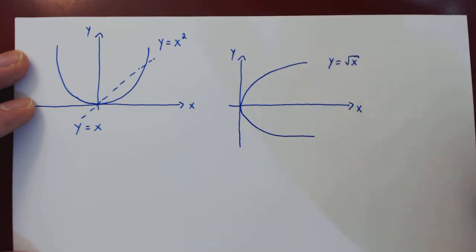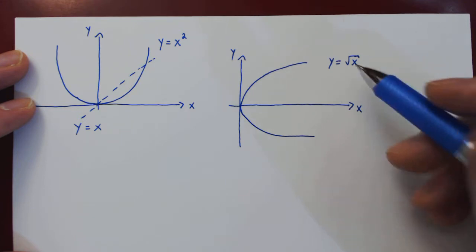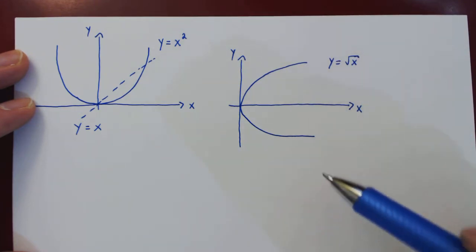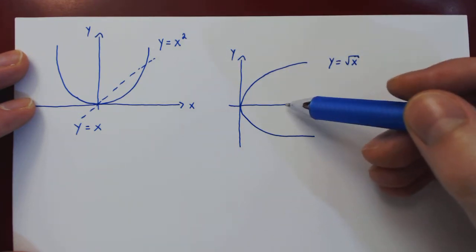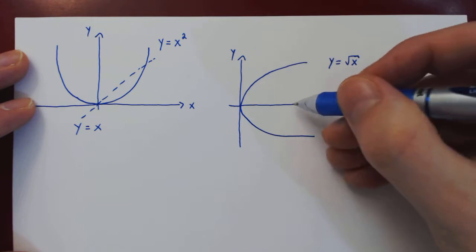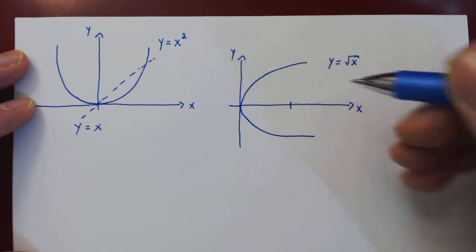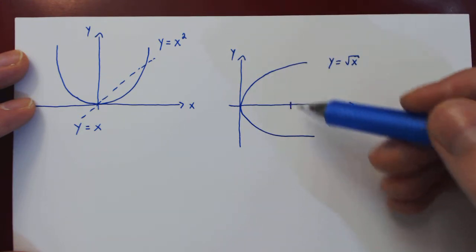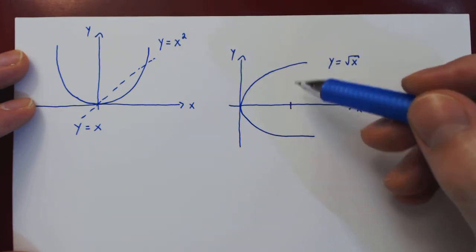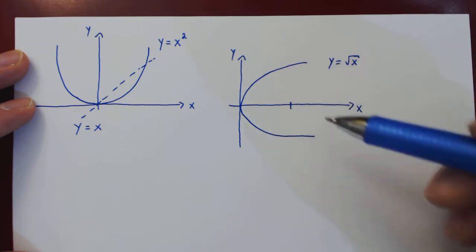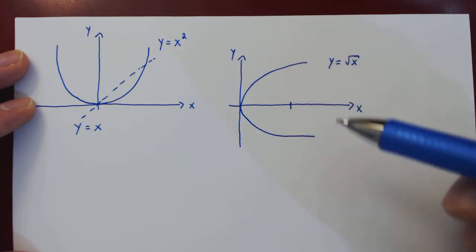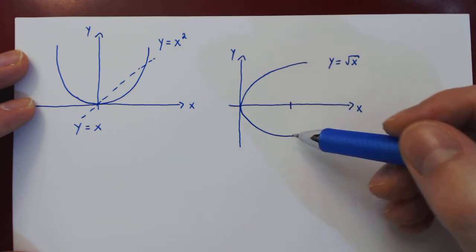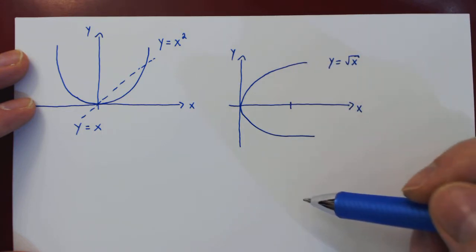The one key observation here is that the square root of x is not a function. For any given positive x value, there are two distinct possible solutions: one positive y value and one negative y value.